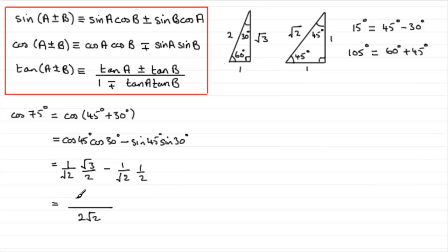And we've got root 3 minus 1, and you could leave it like that, or you could decide to rationalize this by multiplying top and bottom by root 2. So this gives us root 2 times root 3, which is root 6, and minus 1 times root 2, which is root 2.